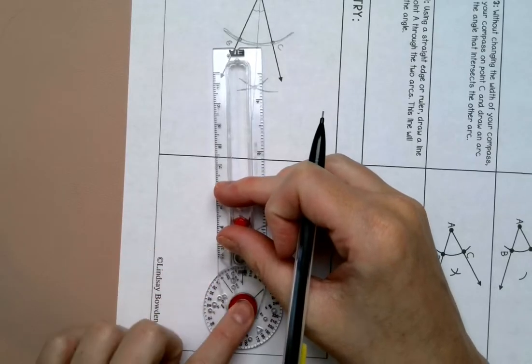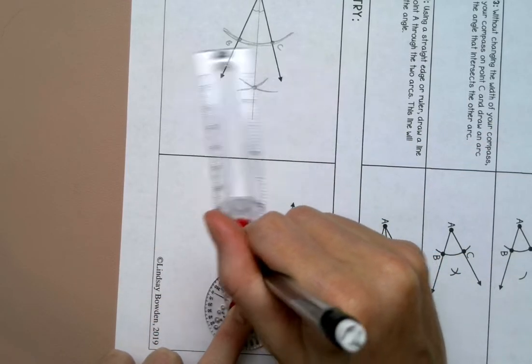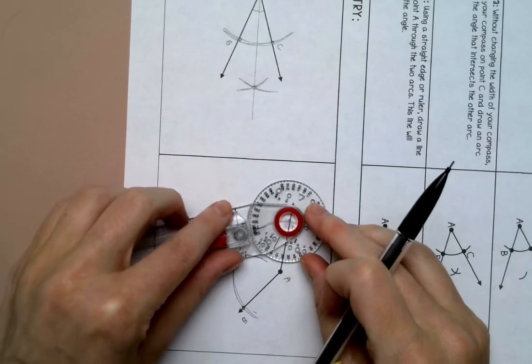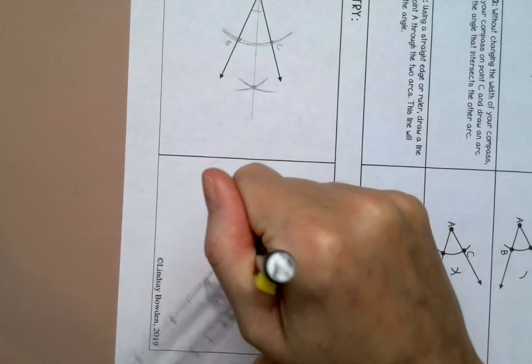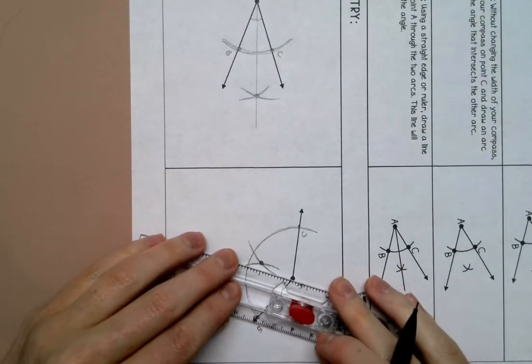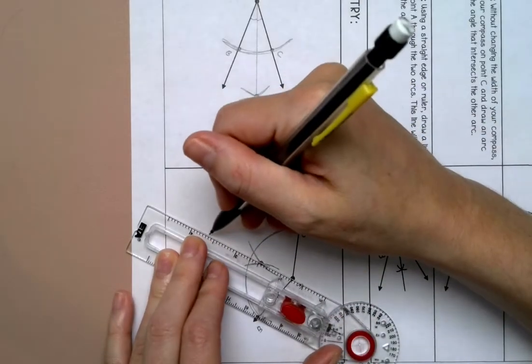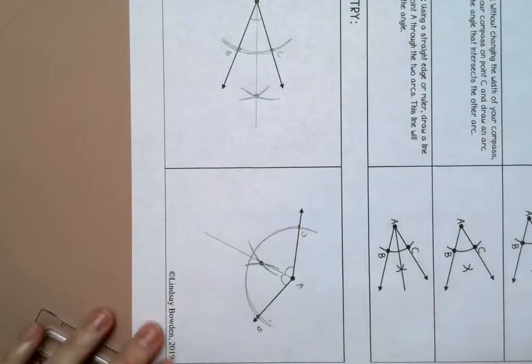And then I'm going to put my compass on B and draw an arc. Put my compass on C and draw an arc. And where they meet I'm going to draw a straight line from the vertex through that point. And that should bisect my angle.